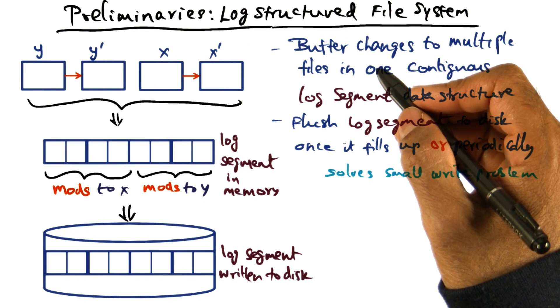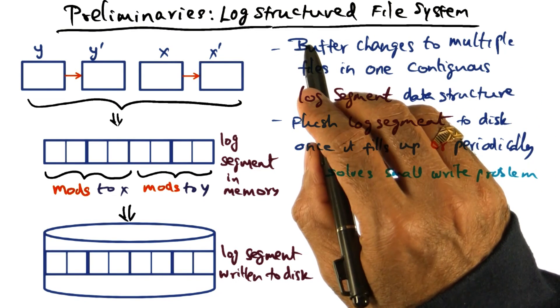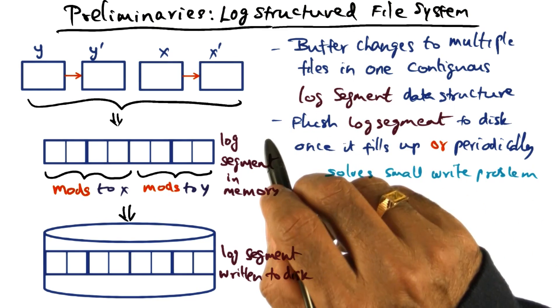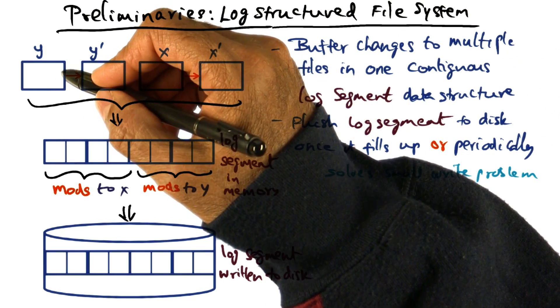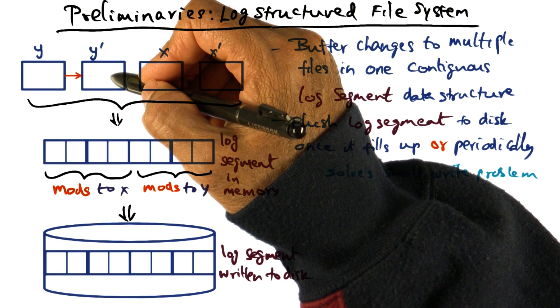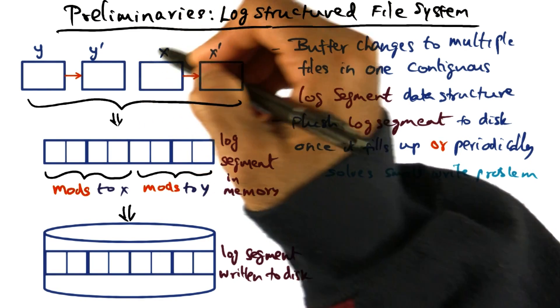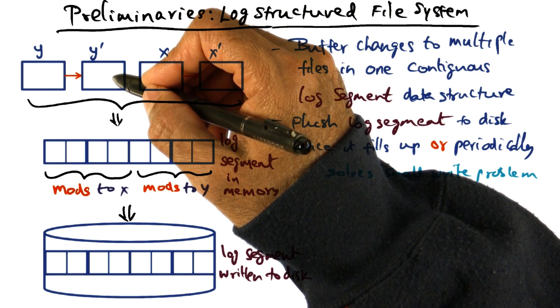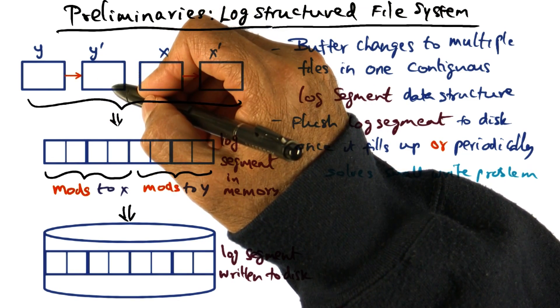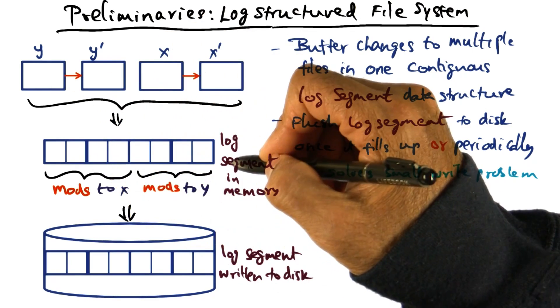That brings me to another background technology that I have to explain to you, which is called log-structured file system. The idea here is that when I make a change to file y, meaning I either append to the file or make some modifications to it, what I'm going to do is rather than write the file as is, I'm going to write the change that I made to the file as a log record.